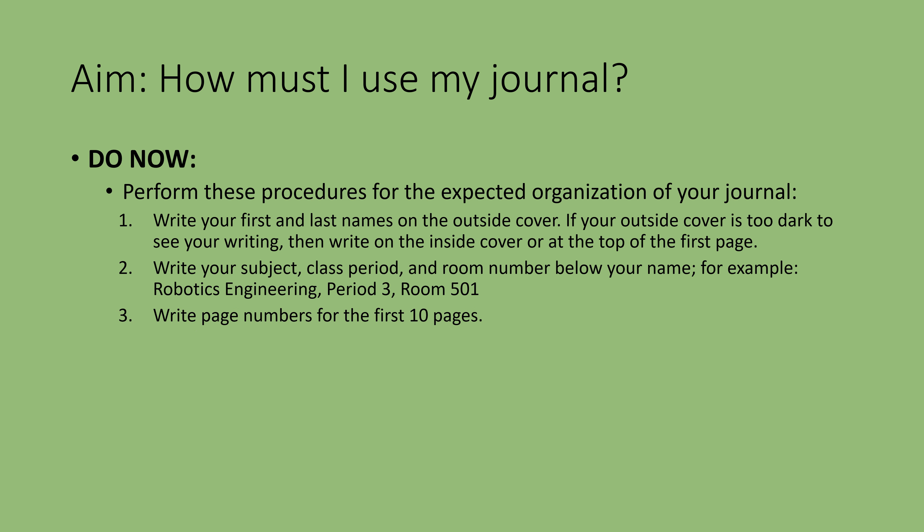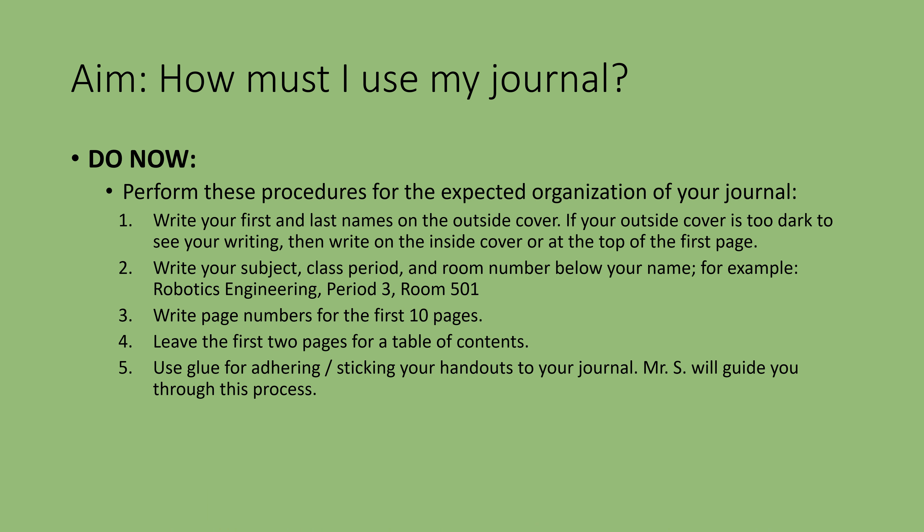Three: write page numbers for the first 10 pages. Remember that a sheet of paper has two sides and each side is a page. Four: leave the first two pages for a table of contents. If you have already written on these pages, then you can use the next two pages as your table of contents. Five: use glue for adhering or sticking your handouts to your journal. I will guide you through this process.